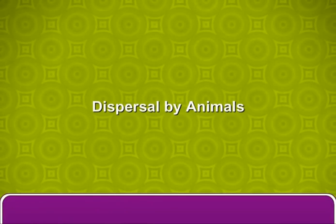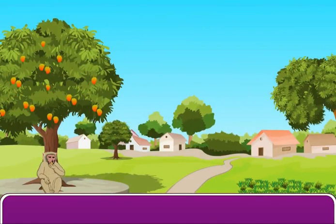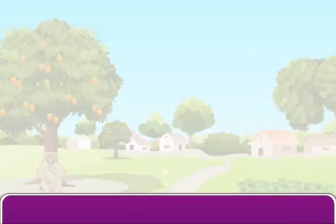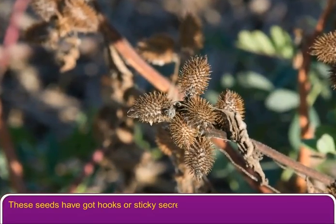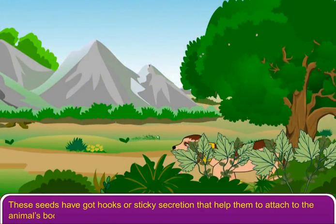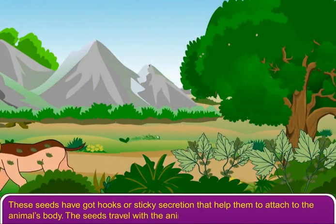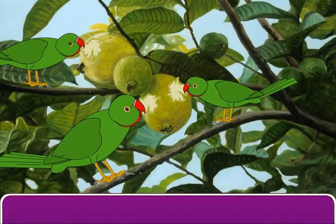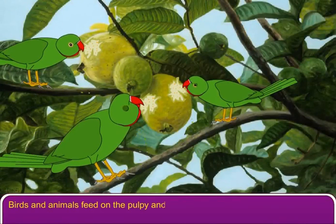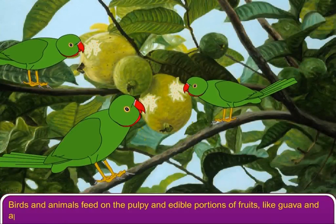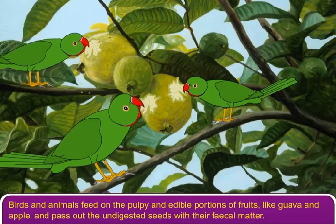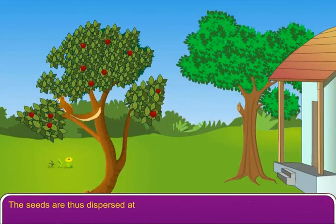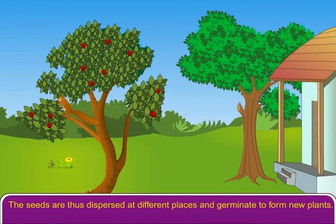Dispersal of fruits and seeds by animals. Many seeds and fruits are dispersed by various animals. These seeds have got hooks or sticky secretion that help them to attach to the animal's body, and the seeds travel with the animals to distant places. Birds and animals feed on the pulpy and edible portions of fruits, like guava and apple, and pass out the undigested seeds with their fecal matter. The seeds are thus dispersed at different places and germinate to form new plants.